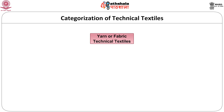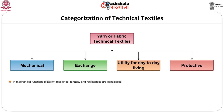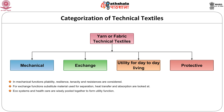Now let us go into the next section where we will be seeing about the categories of technical textiles. In general, technical textiles are categorized into four major aspects: mechanical, exchange, utility to day-to-day life, and protective functions. In mechanical functions, pliability, resistance, stiffness and resistance are considered. For exchange functions, substitutes, materials used for separation, heat transfer and absorptions are looked at. Whereas for ecosystems and healthcare, products are pooled together to form utility functions. Protective functions include fabrics which protect us against electrical, IR, UV and chemical harshness.